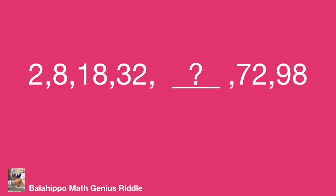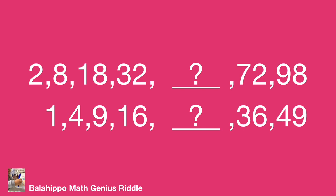Look at the number series: 2, 8, 18, 32, the missing number, 72, and 98. If I divide all of them by 2, they become 1, 4, 9, 16, the missing number, 36, and 49.